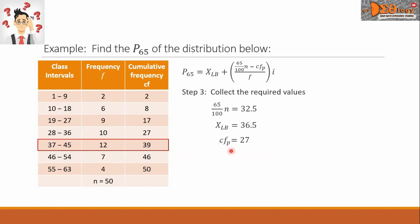Next is the CF sub P. This is the cumulative frequency of the class preceding the P sub 65 class. Here is 27. So we copy it here. F equals 12. That is the frequency of the P sub 65 class. I is the class width. It is the number of terms or numbers inside a class.